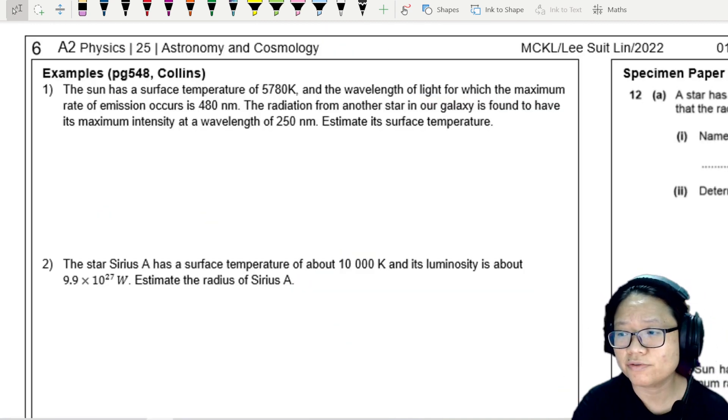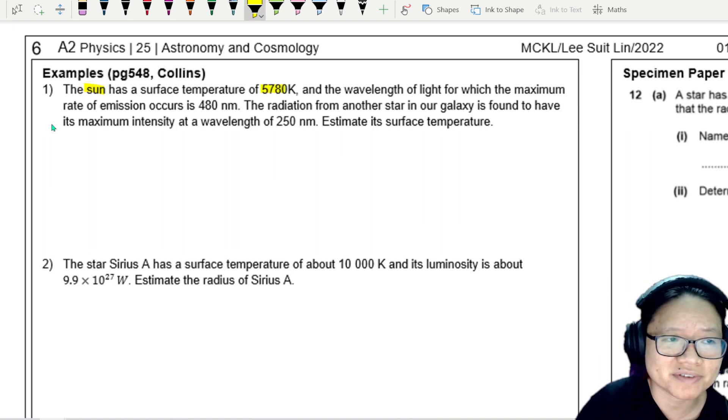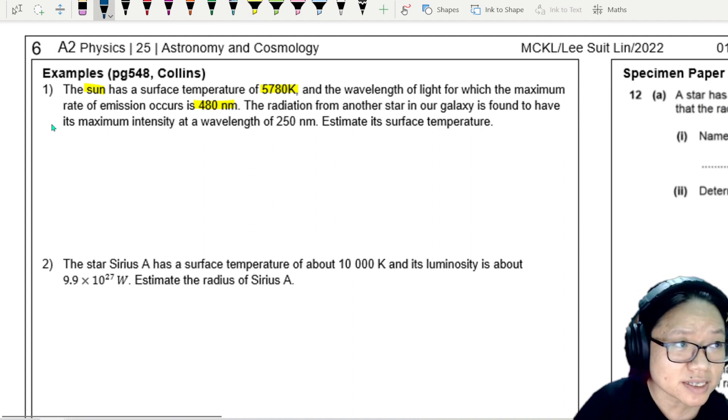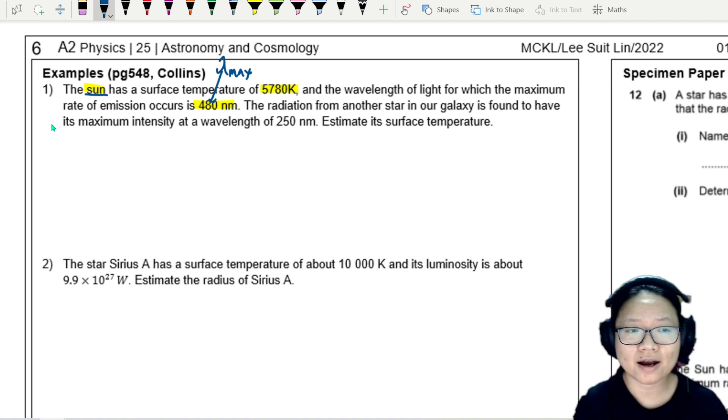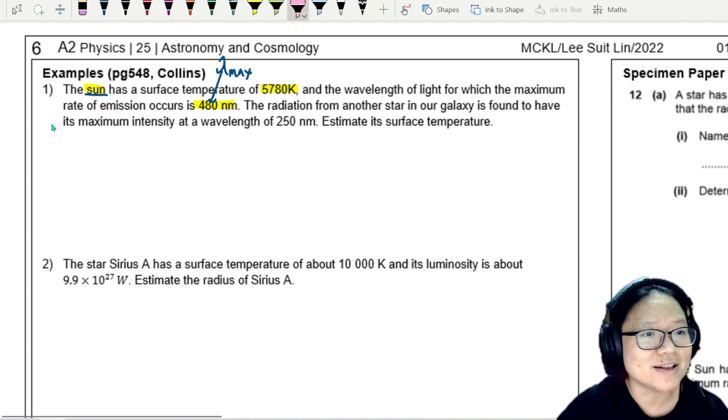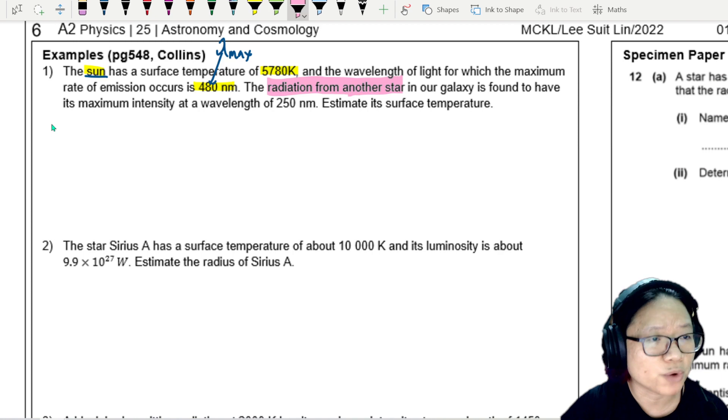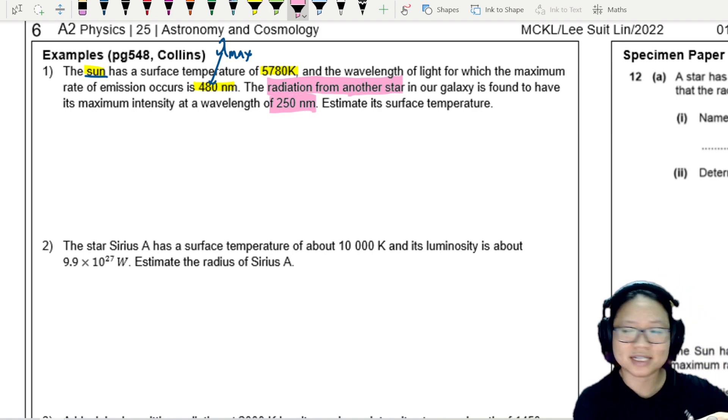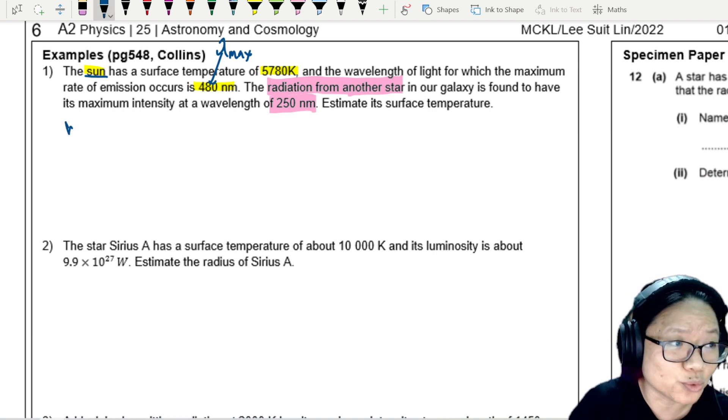So here's a quick question for you to apply the Wien displacement law. The sun, our good old sun, has a surface temperature of 5780 Kelvin. The wavelength of light for which the maximum rate of emission is 480 nanometer. So this is your lambda max for our sun. Now we're going to look at another star. The radiation from another star in our galaxy is found to have a maximum intensity of wavelength 250 nanometer. Estimate the surface temperature. Of course, we're not going to fly over there and stick a thermometer into the star because we can't do that. So then we can use Wien displacement law.